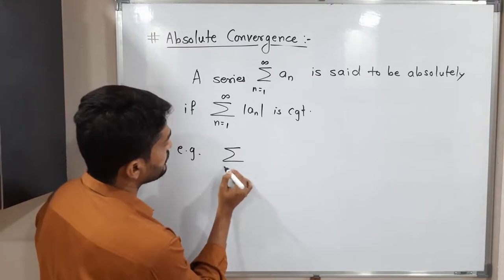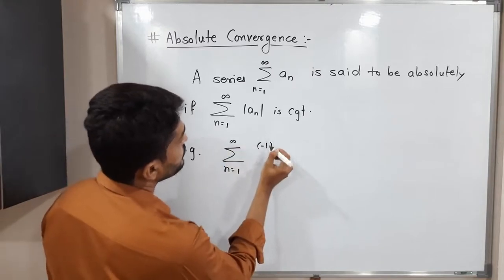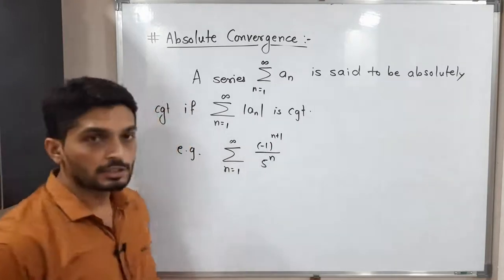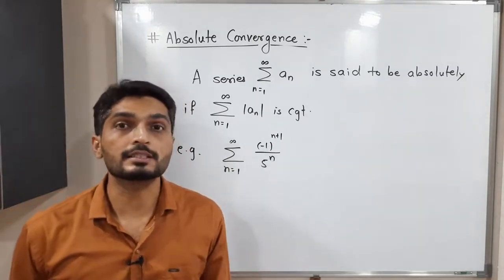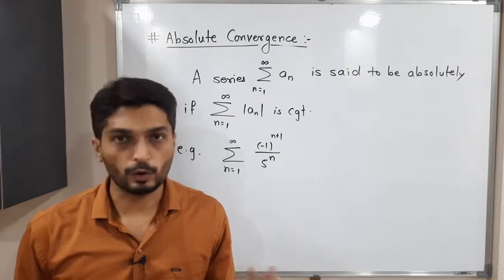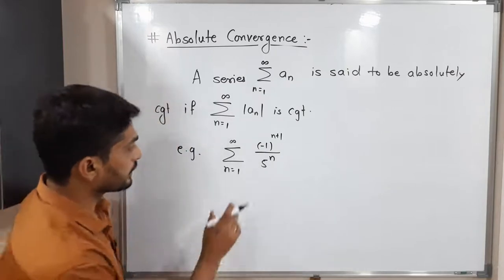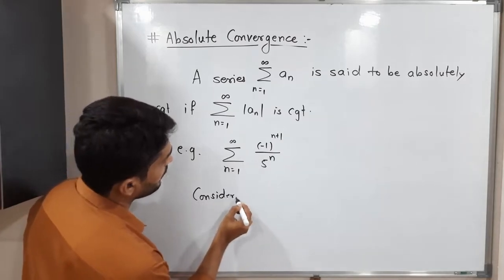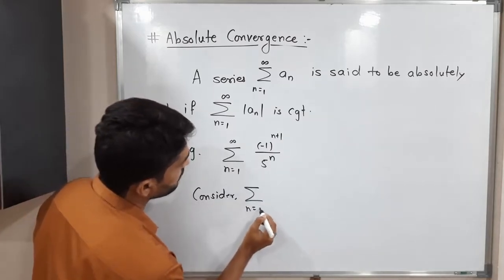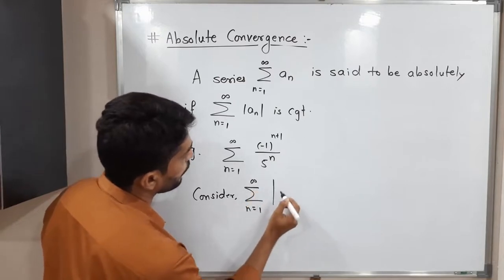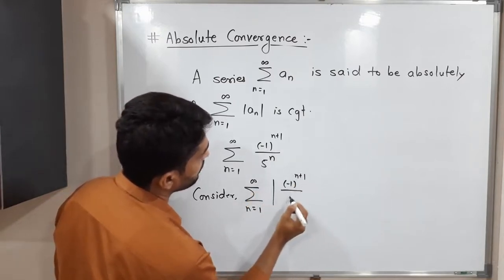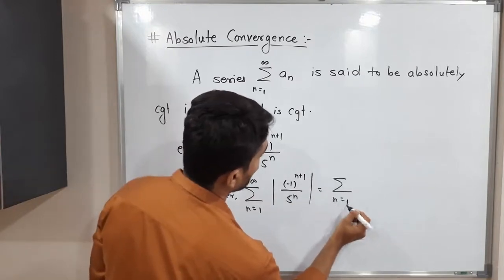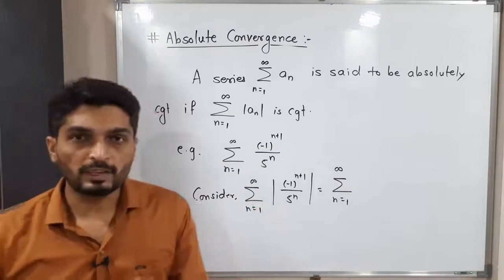Let us discuss one example. I am considering the series summation from n=1 to infinity of (-1)^(n+1) / 5^n. We have to check whether this series is absolutely convergent or not. For that, I apply modulus to each term: summation from n=1 to infinity of |(-1)^(n+1) / 5^n|.